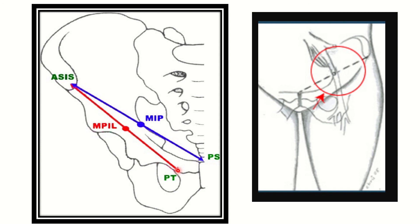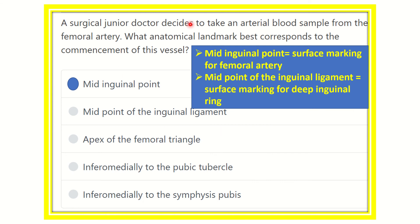It is important to note that the midpoint of the inguinal ligament does not correspond with the femoral artery. The mid-inguinal point is the surface marking for the femoral artery, whereas the midpoint of the inguinal ligament is the surface marking of the deep inguinal ring. The ligament is related to the deep inguinal ring, not the femoral artery.